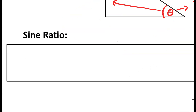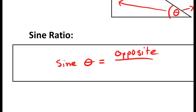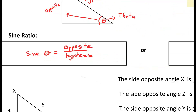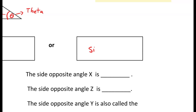Now, looking at the sine ratio, the way we write this out as a formula is: sine theta equals our opposite over our hypotenuse. The shorter abbreviated version is sine θ = O/H — opposite over hypotenuse. If you prefer to write that out when calculating, that's the shorter version instead of writing out the full word every time.